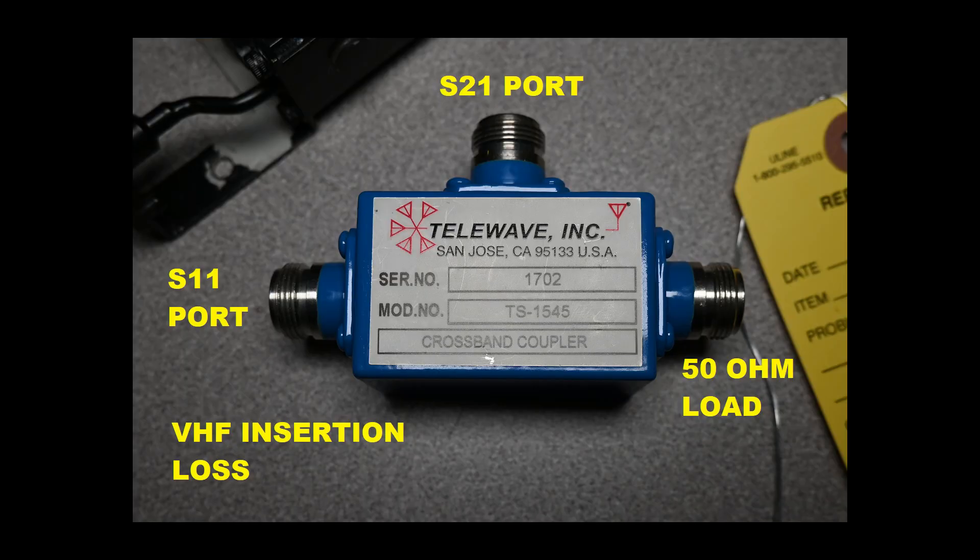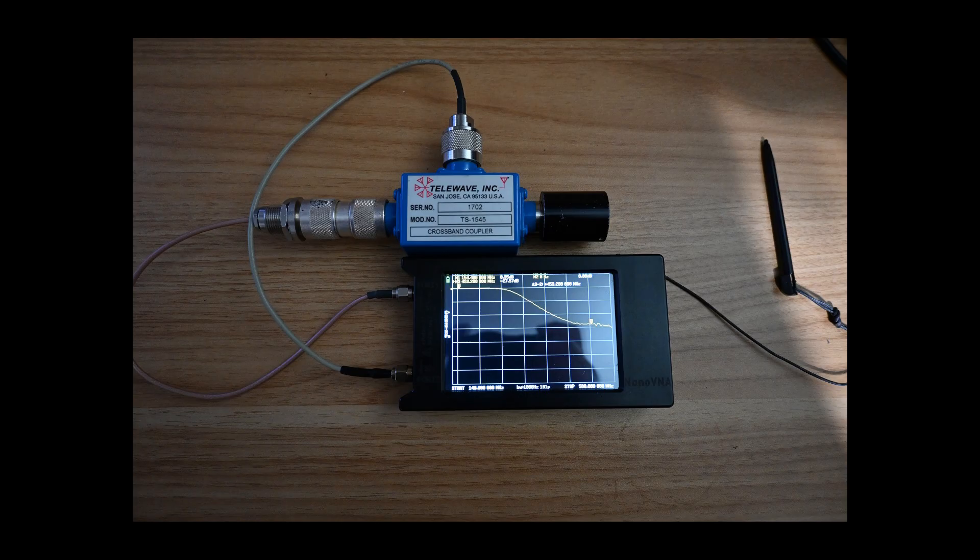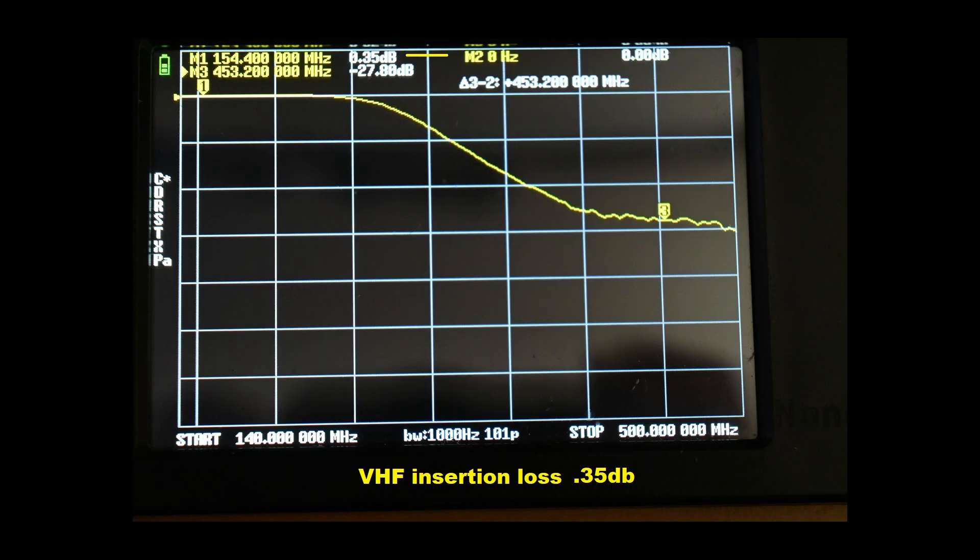First we will test for insertion loss and this is how we will connect our device under test for VHF. The RF goes out port S11 through our device and is measured at port S21. The load goes on the UHF port. This is how it looks connected. And here is our measurement. We have 0.35 dB of insertion loss at VHF through our device. Marker 3 should represent our isolation but we are going to confirm that in another test.